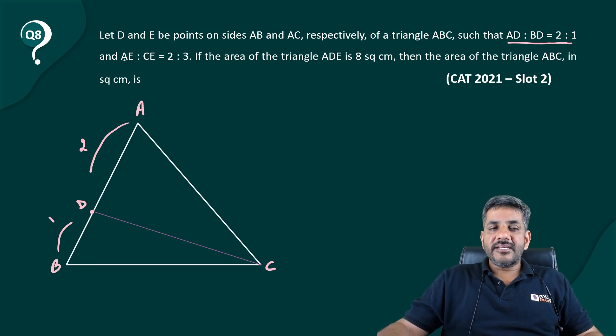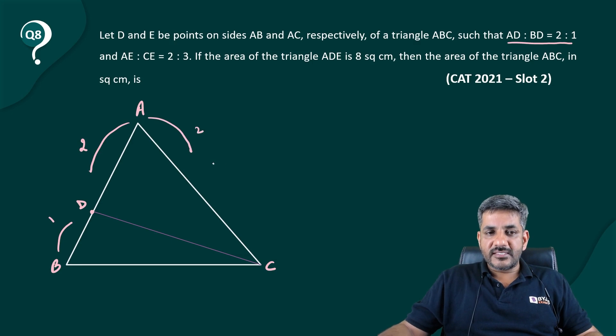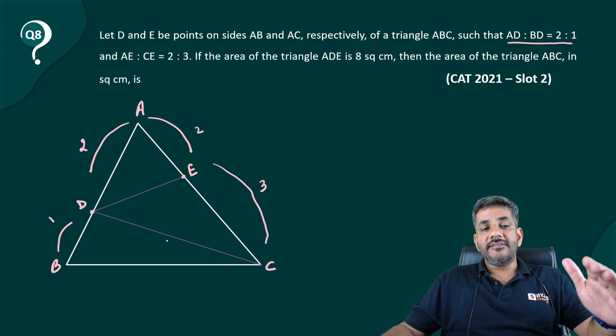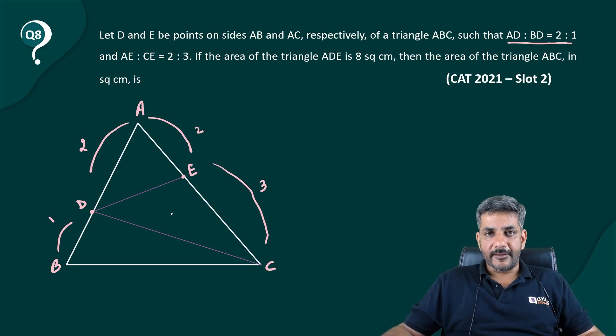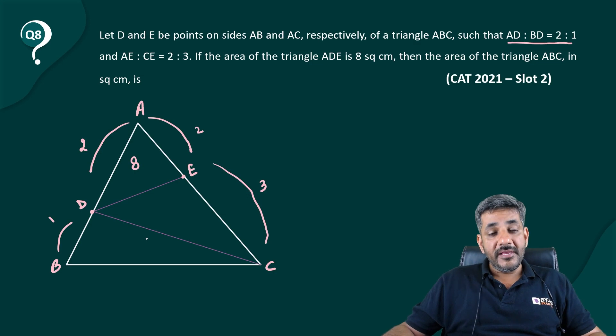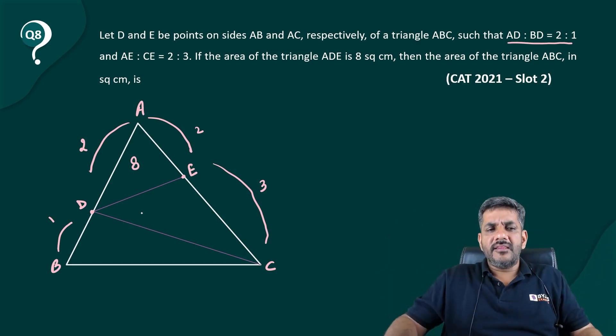In a similar way, he says AE to CE is 2 to 3. So if AE is 2, then CE is 3. So on this part it should be 3, on the other part should be slightly smaller. So therefore I have taken this point as E over here such that AE to CE is 2 to 3. Area of the triangle ADE is given as 8, so this area is given to us as 8. Then the area of triangle ABC in square centimeters we have to find.